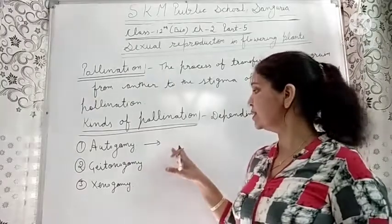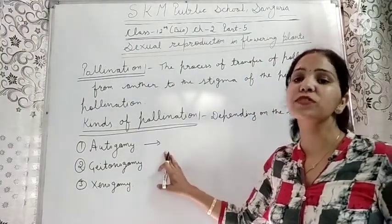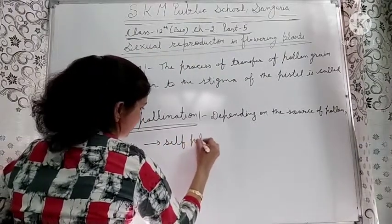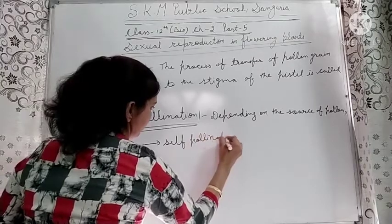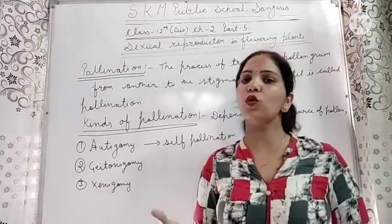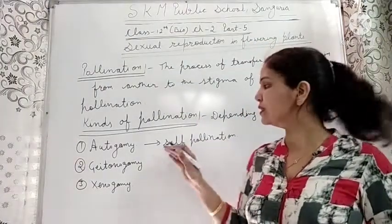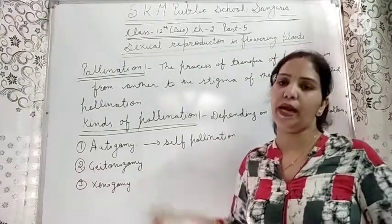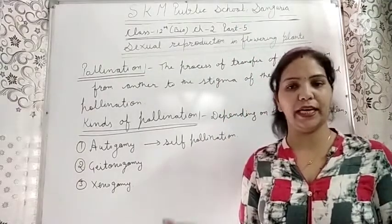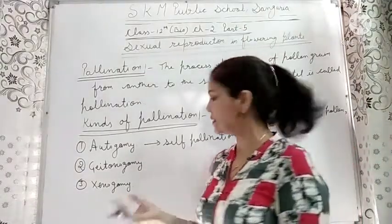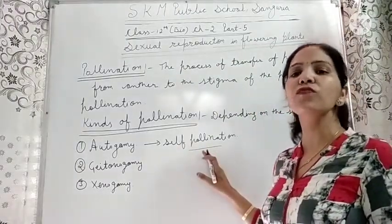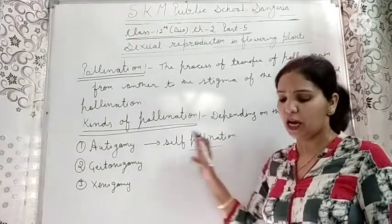Autogamy is the type of self-pollination. Transfer of pollen grain from anther to stigma of the same flower is called autogamy. Self-pollination is involved in autogamy.